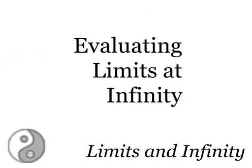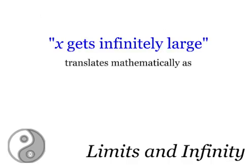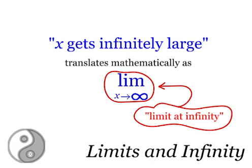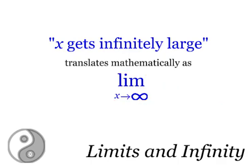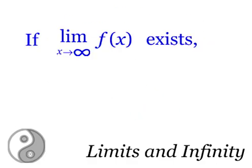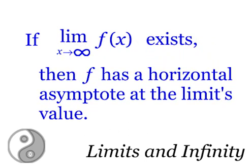When I was explaining the last example, I said that x was getting infinitely large and we translated that mathematically as the limit as x approaches infinity. Now this type of limit is called a limit at infinity. If this limit exists for a function, then that function possesses a horizontal asymptote at the height given by the limit. That's a lot of gobbledygook, but it's very simple in practice.